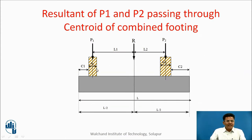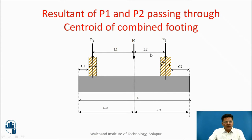Here, column C1 carries load P1 and column C2 carries load P2. The resultant of these two forces is R. The distance between P1 and R is L1, and the distance between P2 and R is L2. When the loads are slightly different, the resultant will always shift towards the heavier load — if P2 is heavier it shifts right, if P1 is lighter it shifts left.